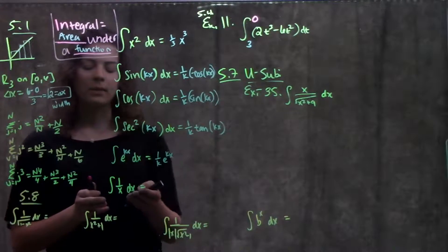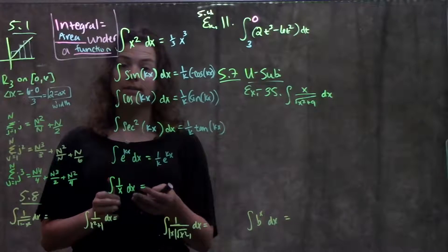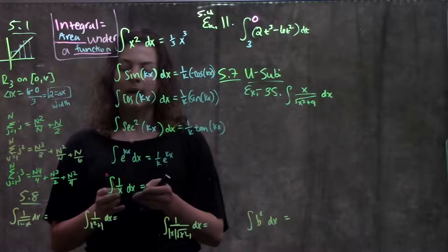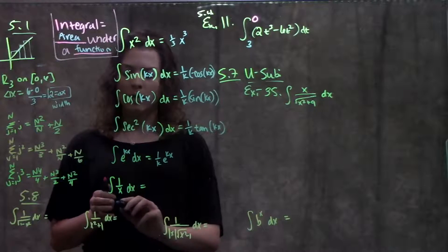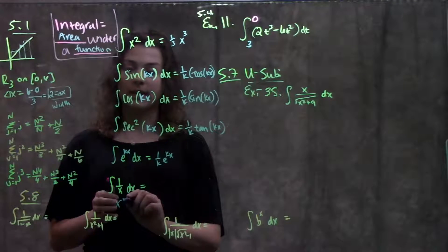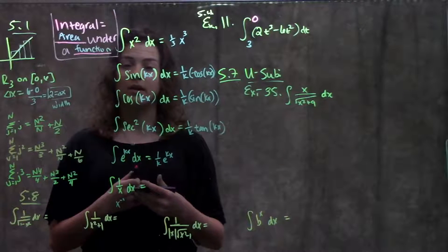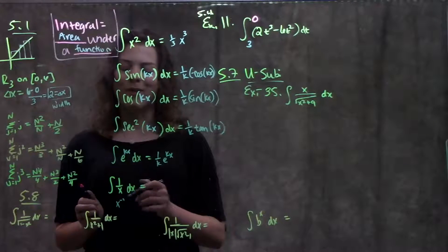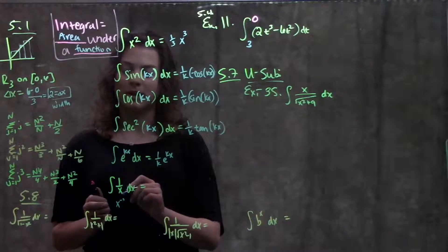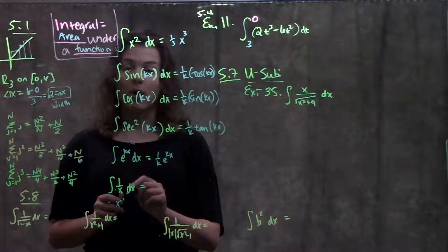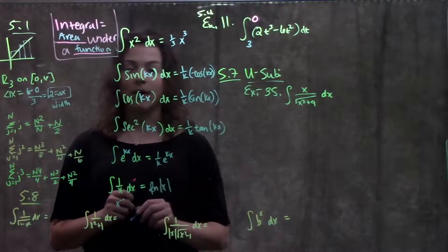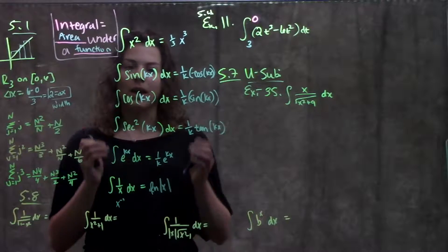Over here, we have 1 over x, or x to the negative first power. Here, we can't use our power rule because if we were to add 1 to x to the negative 1, it would become x to the 0, and that's just weird. So we have a special rule for this type of function. The integral of 1 over x is ln absolute value of x.